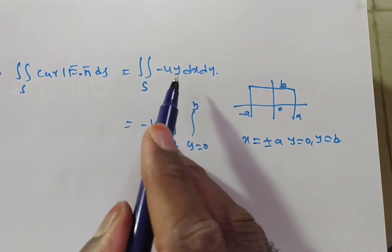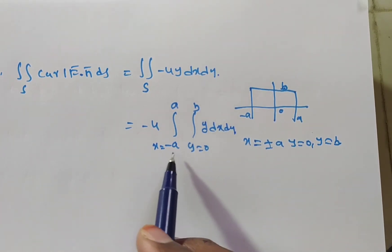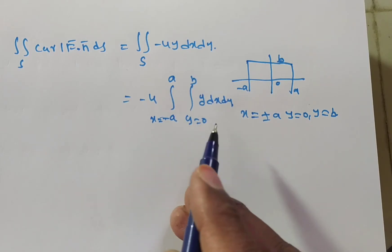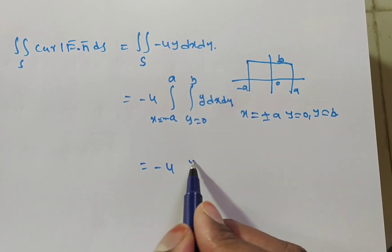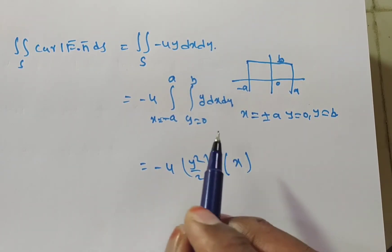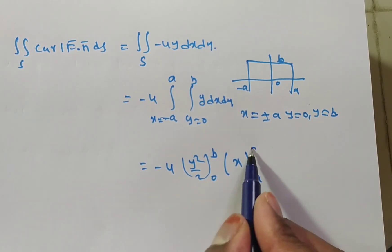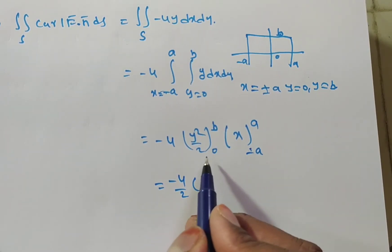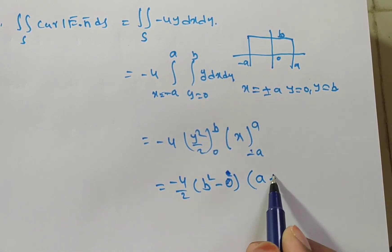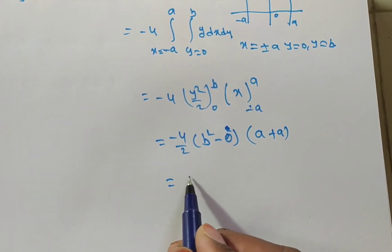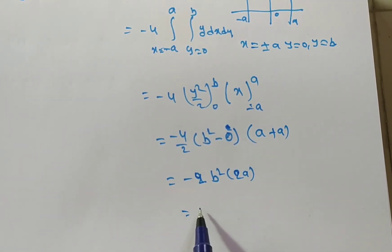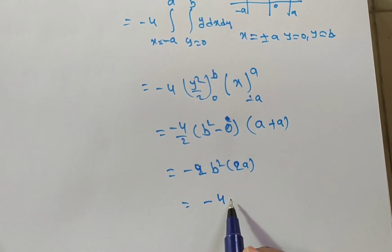Integrating first with respect to y: ∫₀ᵇ y dy = y²/2 evaluated from 0 to b = b²/2. Then integrating with respect to x: ∫₋ₐᵃ dx = x from -a to a = 2a. So we have -4 × (b²/2) × 2a = -4 × b² × a = -4ab².